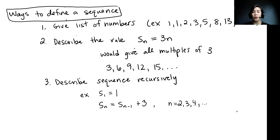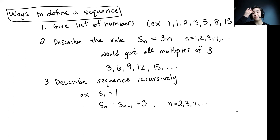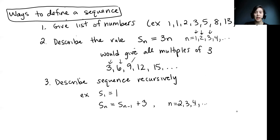Another option is we can describe the rule explicitly. Here we have Sn equals 3n, for n equals 1, 2, 3, 4, and so on. Using this rule, we plug in n equals 1 to get S1 equals 3, plug in n equals 2 to get 6, plug in n equals 3 to get S3 equals 9, and so on. This gives us all the multiples of 3.